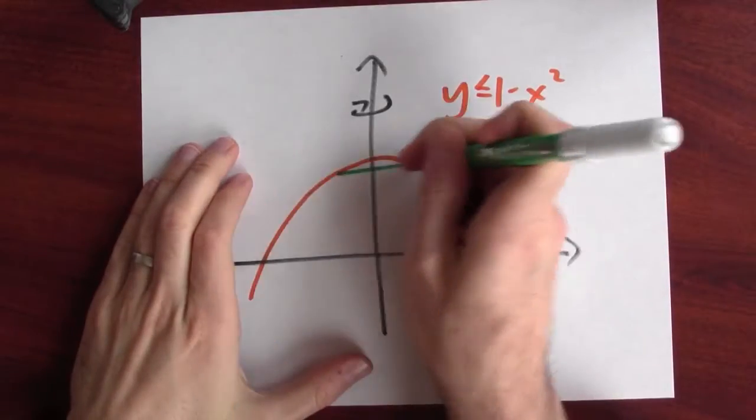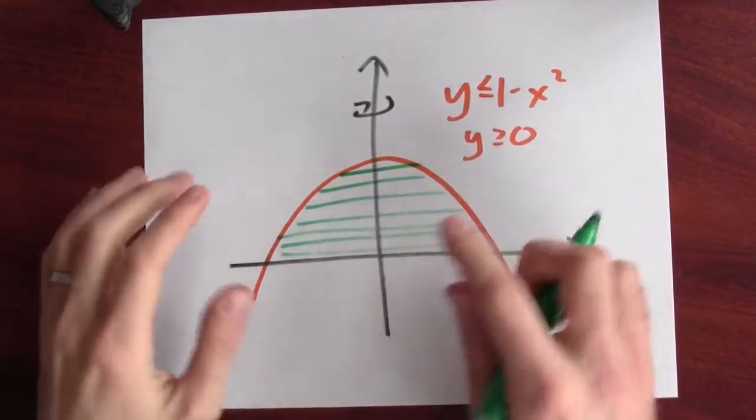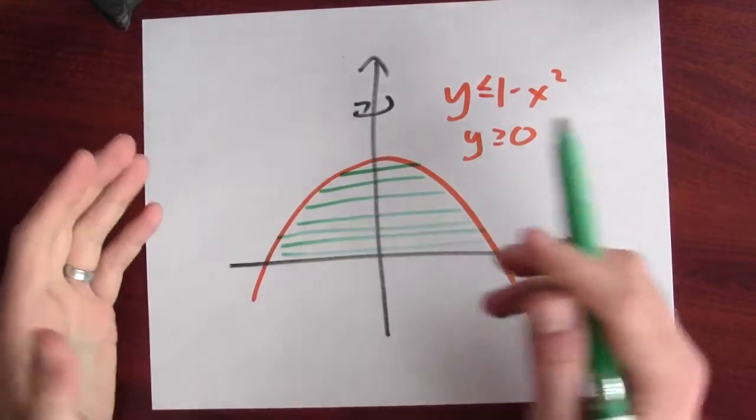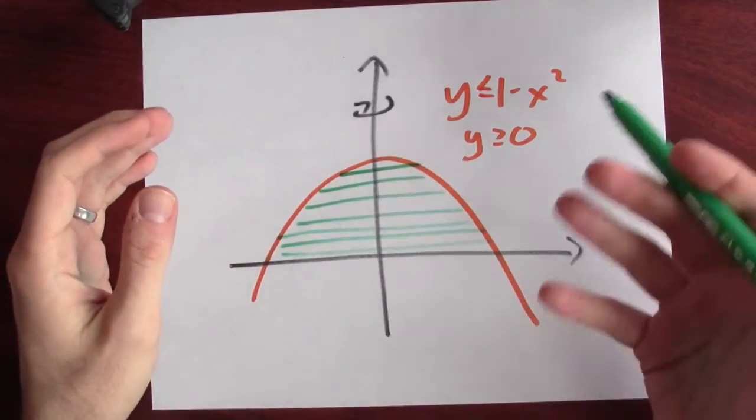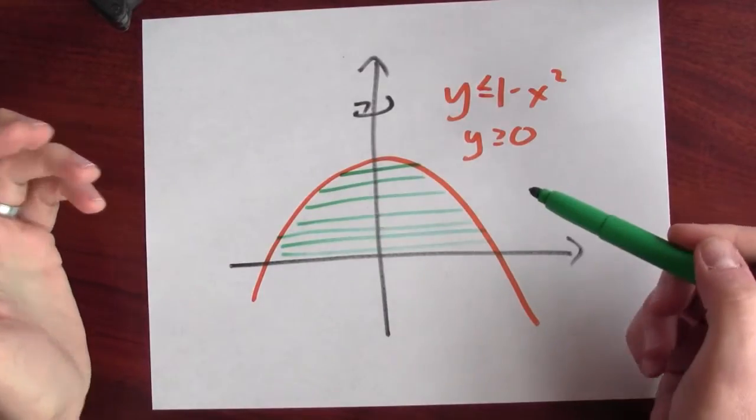Admittedly, we could do this problem without using shells but using washers. In that case, I'd be chopping the region up into horizontal slices. And each of these horizontal slices, when I rotate it around the y-axis, would give me a disk. And then I just integrate the volumes of those disks to give me the volume of the solid of revolution.